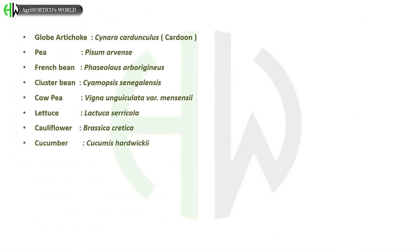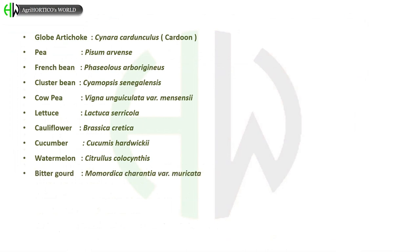Watermelon – Citrullus colosynthus. Bitter gourd – Momordica charantia variety muricata. Sponge gourd and ridge gourd – Luffa graveolens.